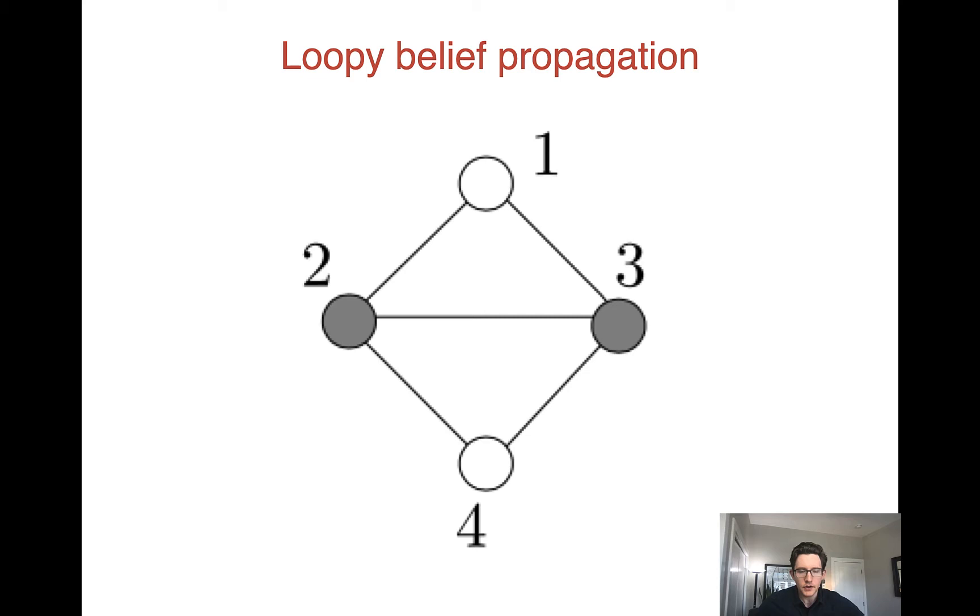So what we're going to want to do is compute messages between every pair of variables. So this is going to look like a message from variable one to two, and that's going to be a distribution over variable two. So that's this edge here that we just did the message for. And we're going to do it for every pair of variables. Now, you might notice the first problem,